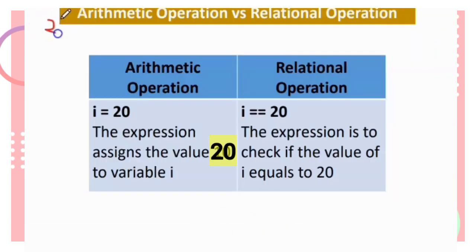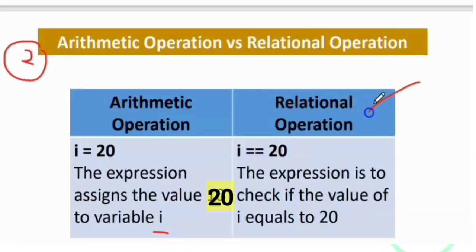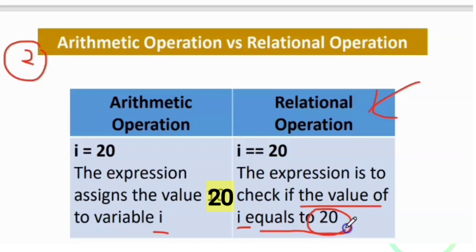Arithmetic operation with relational operation: when you write i == 20, the expression checks if the value of i equals 20.